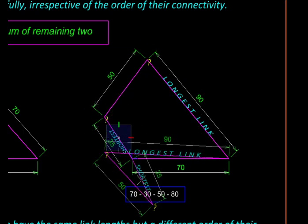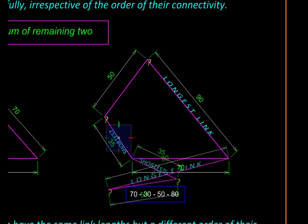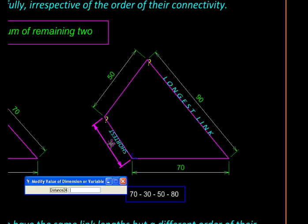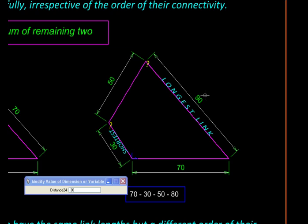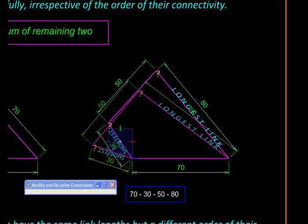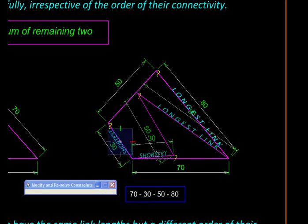So let us change the link lengths. So I will change this to 30 and this to 80 and retest it. And there we go! Now we have a crank again.